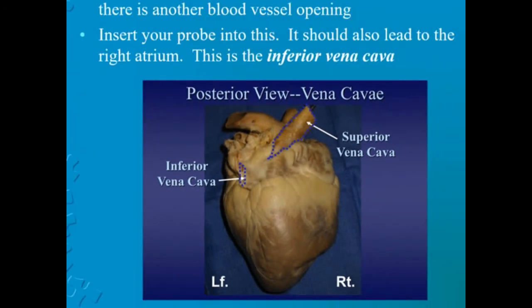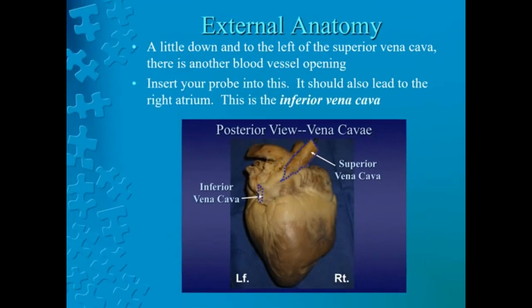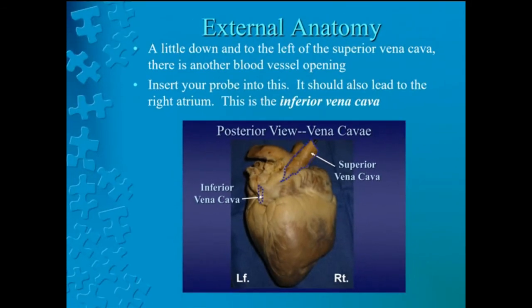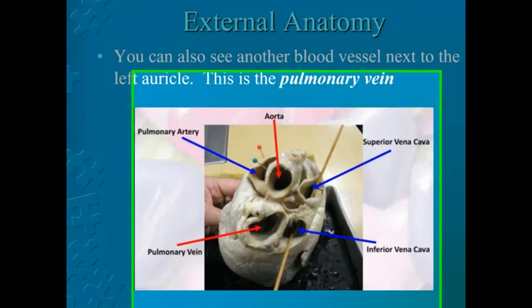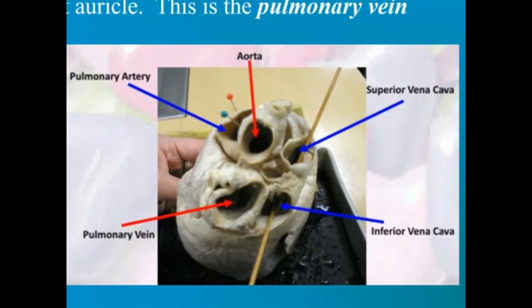While observing the inferior vena cava, you should have also noticed another blood vessel next to the left auricle. This is the pulmonary vein. The pulmonary vein brings blood from the lungs into the left atrium. Pause to locate the pulmonary vein.